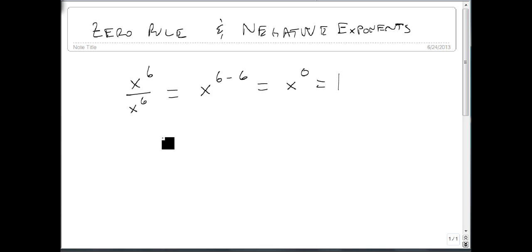So our rule is anything to the zero is one, except when a equals zero. This doesn't work for zero to the zero. Zero to the zero is instead undefined, because we could write this as an example. Let's say this was 0 cubed over 0 cubed, becomes 0 to the 3 minus 3, which is 0 to the zero. But we have a zero on bottom, we can't divide by zero, so this is undefined.